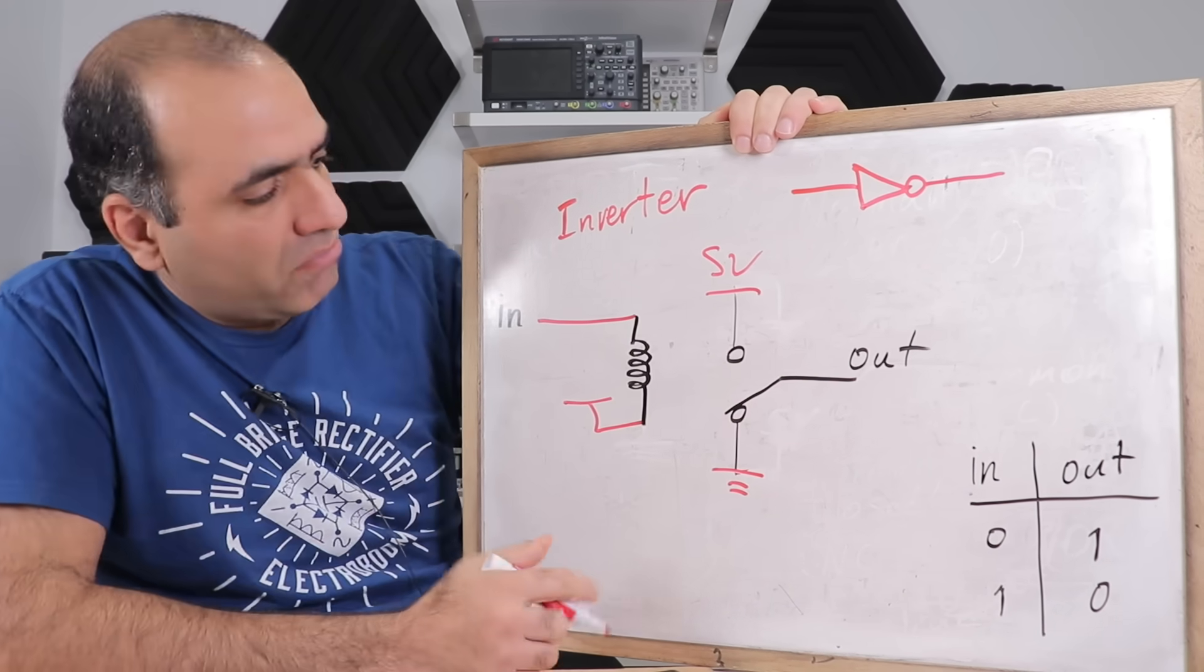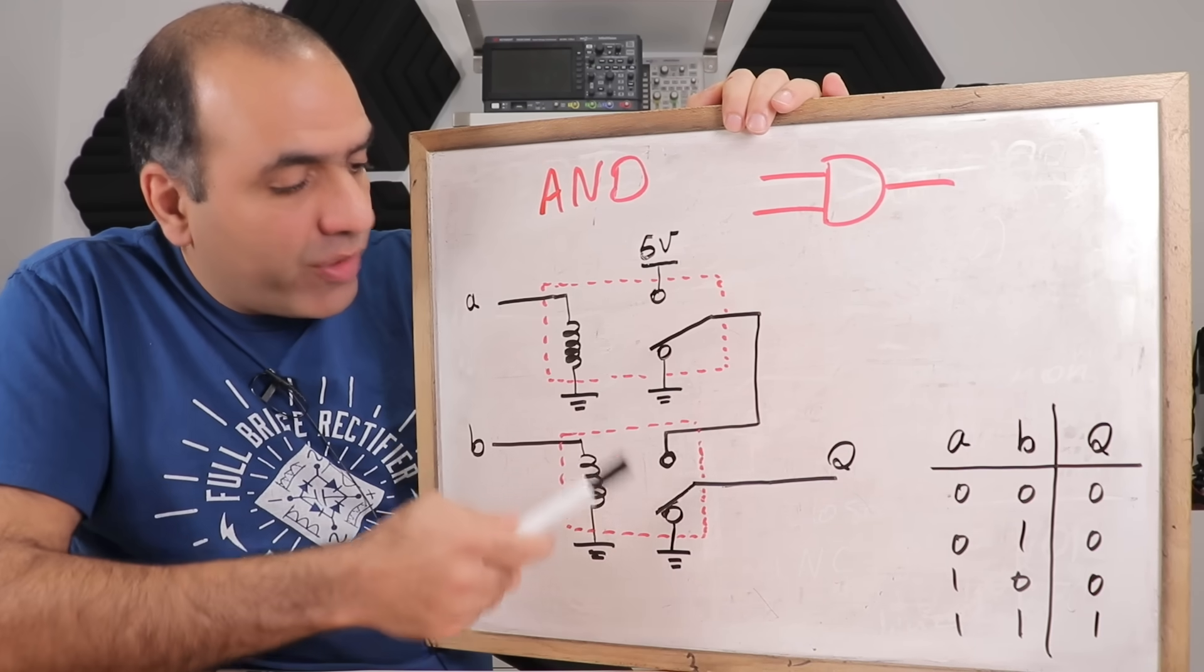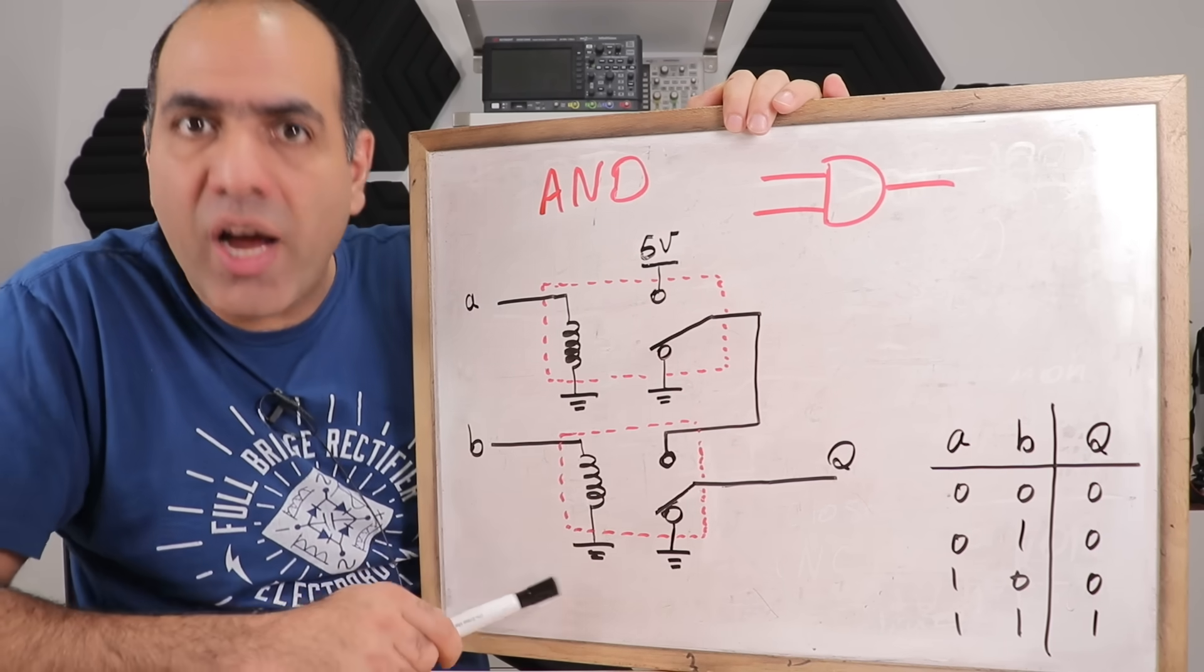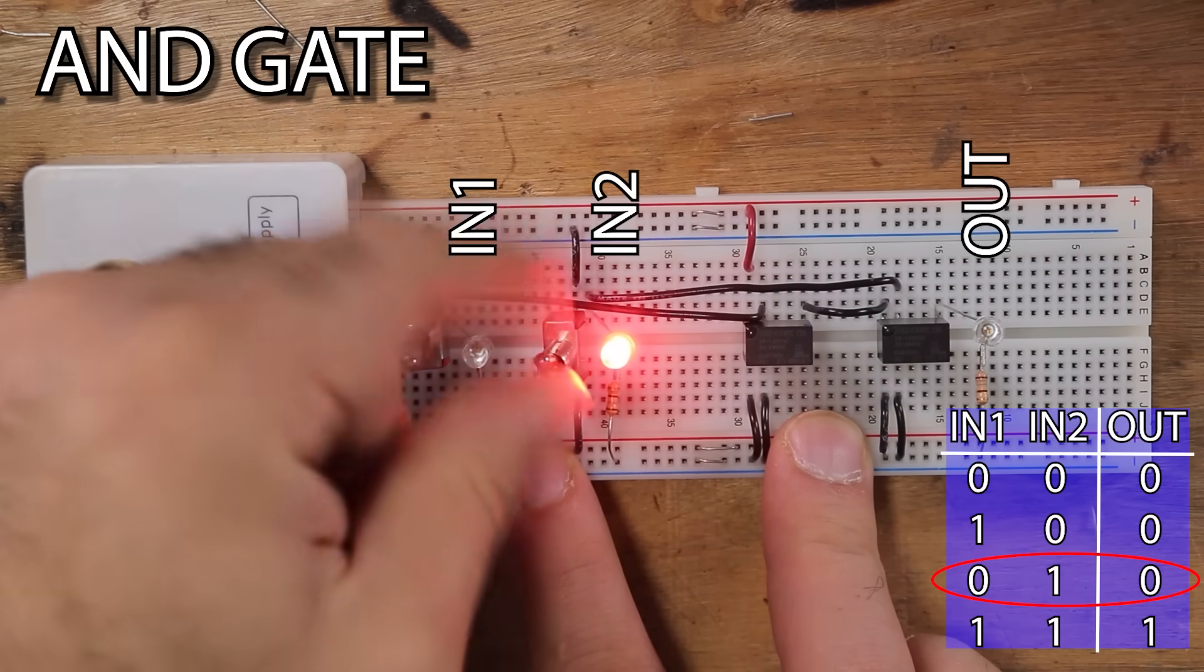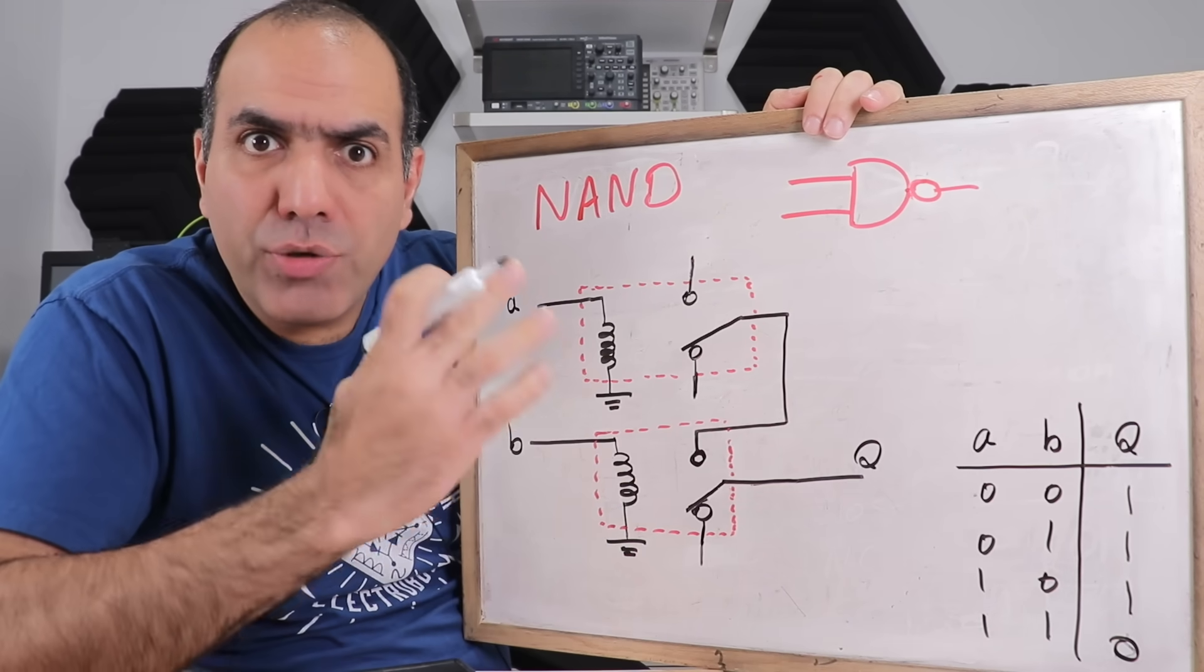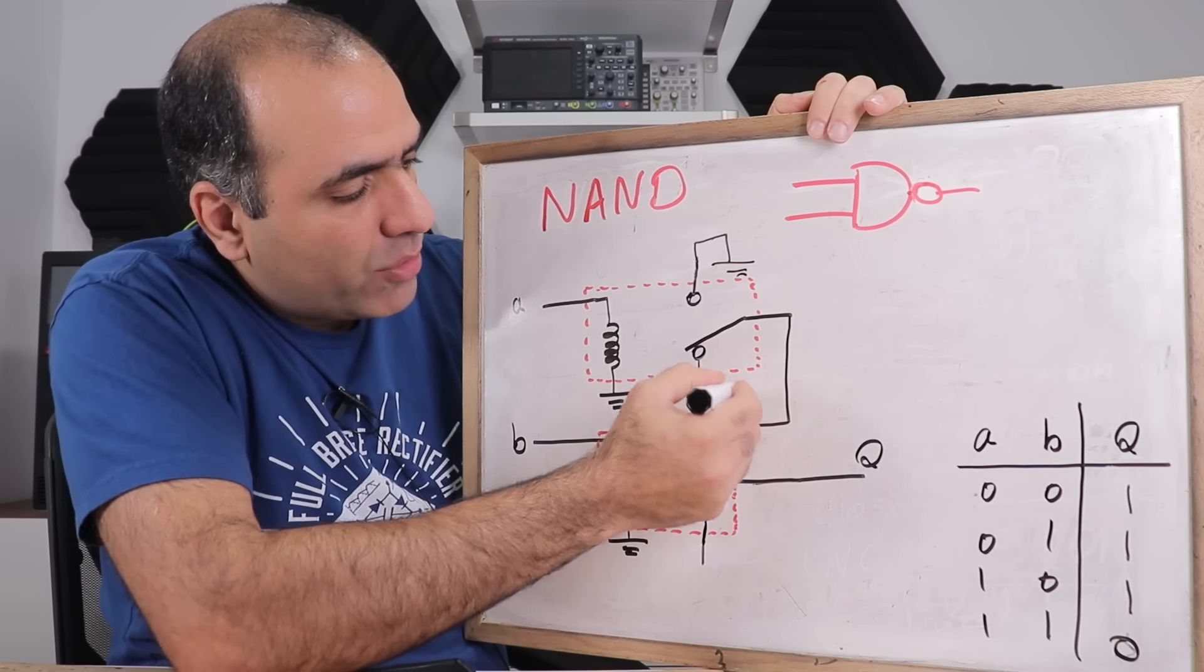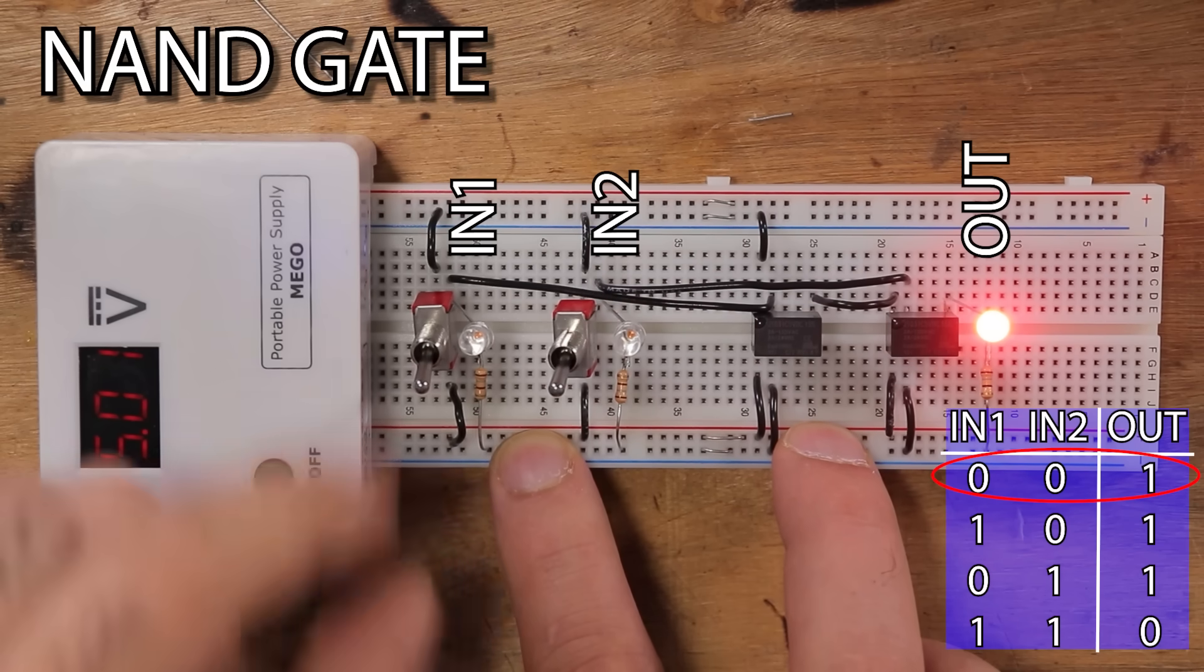Now to make an AND gate, I arrange two relays like this. The output can only be high if both switches switch, or both inputs are high. Like this, the output is high only when both inputs are high. And to make a NAND gate, all you need to do is to invert the output by flipping the power connection to the switch, like this. So now the output is only low when both inputs are high.